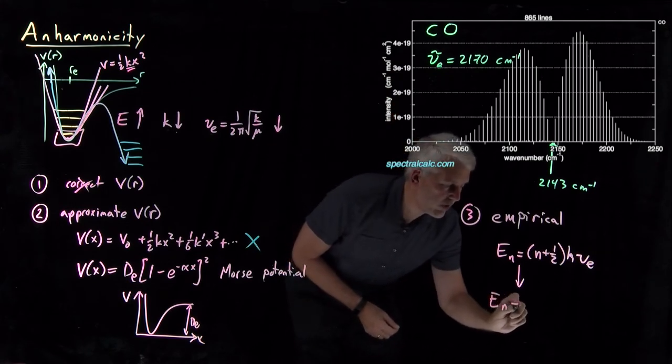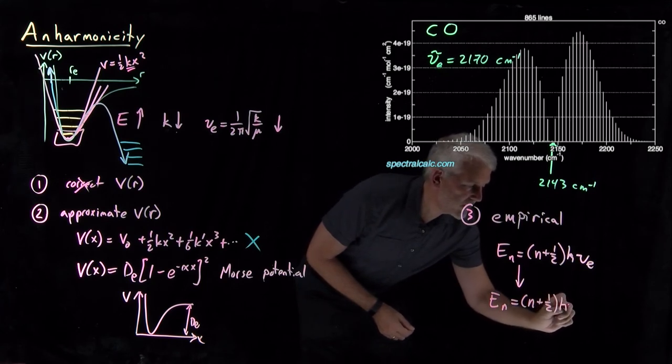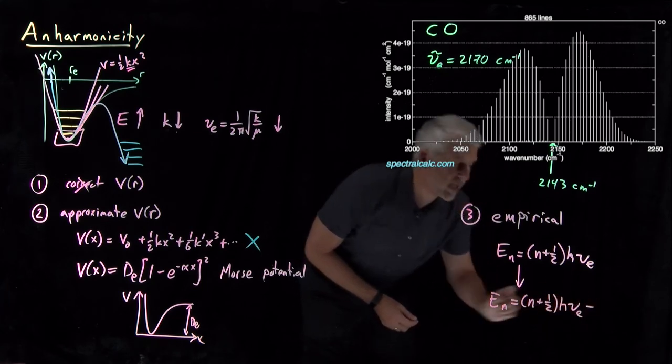Or we could do the following. We could say, let's use this as our initial approximation, n plus a half hν, and then let's subtract something from it. We know that those energies should decrease.